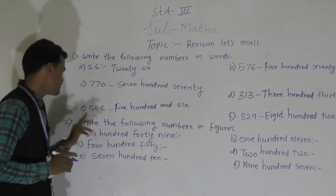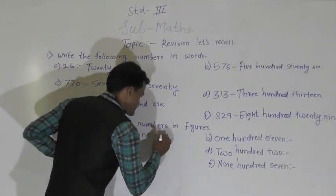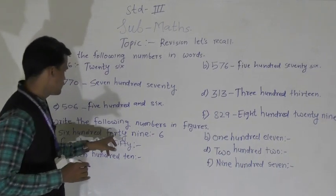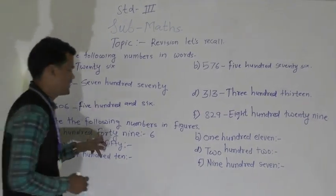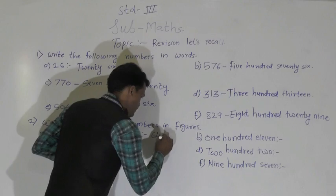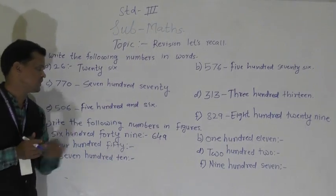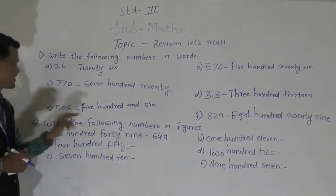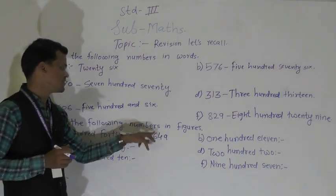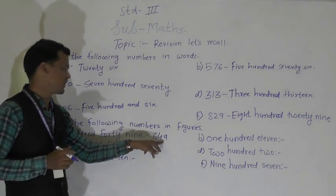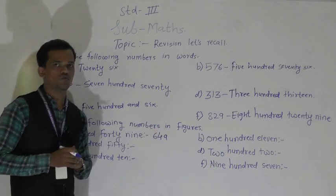So for 649: write 6 at the hundreds place, 4 at the tens place — 40 means 4 at tens — and 9 at the ones place. So we have written the number 649.